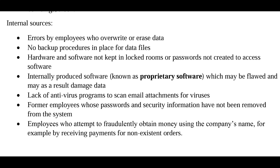Third, hardware and software are not kept in locked rooms, or passwords are not created to access software — simply having your system in the open is a vulnerability. Fourth, internally produced software, known as proprietary software, may be flawed and damage data; the developer may not resolve all bugs, or bugs may develop over time. Fifth, lack of antivirus programs to scan email attachments for viruses means that when we open an email, viruses can be downloaded easily to our computer, infecting our system.